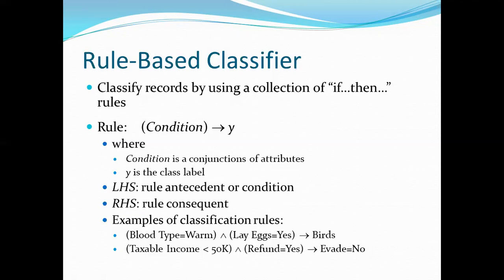The rule has the form: if [condition] then [conclusion]. The condition, or left-hand side, is also called the rule antecedent — a conjunction of attributes. The right-hand side is the rule consequent, which is the conclusion you will get.